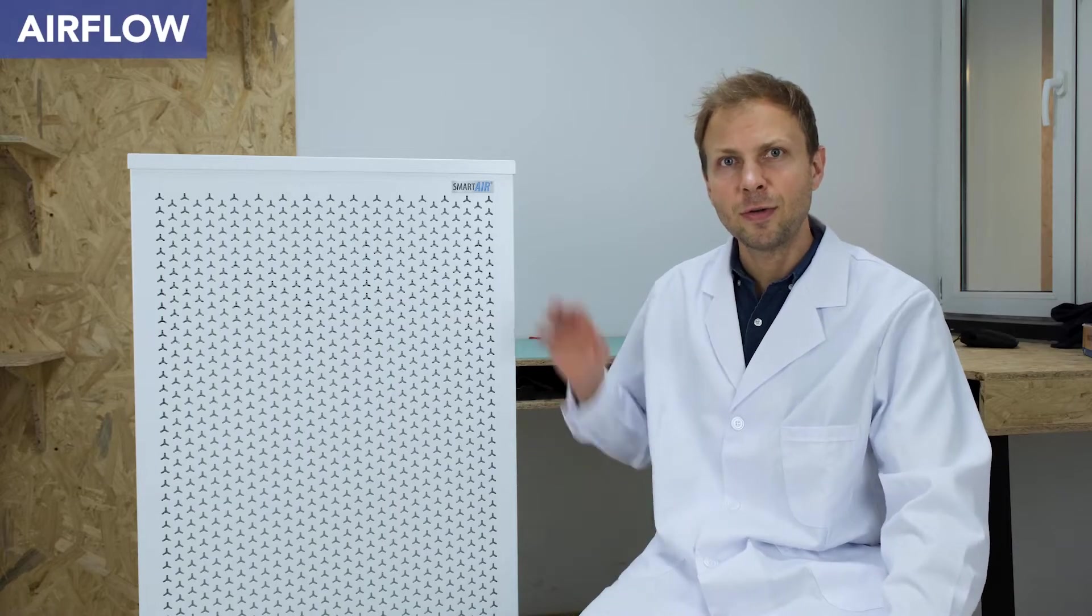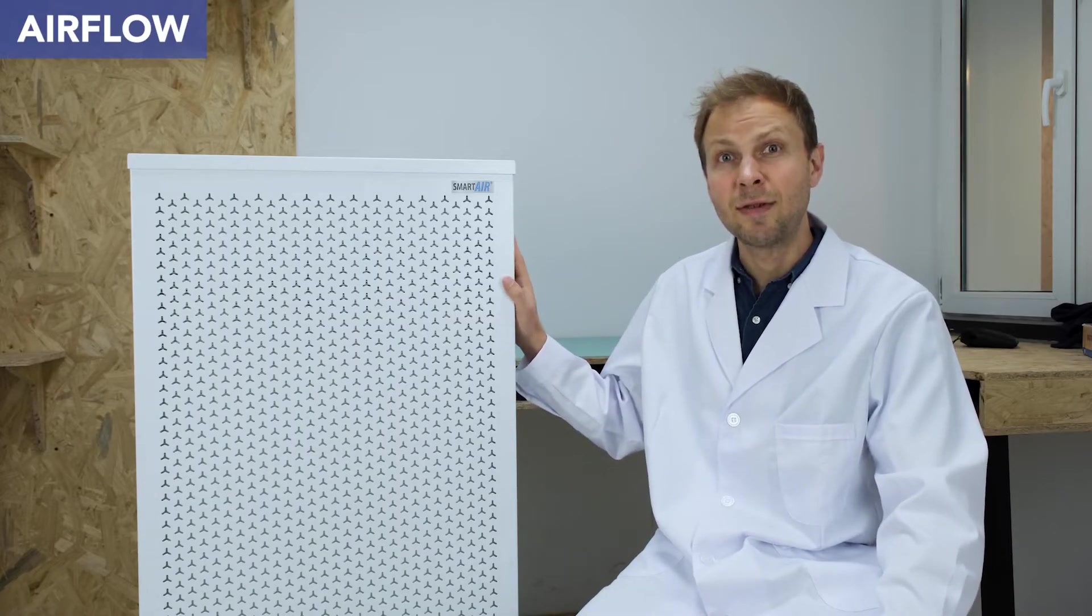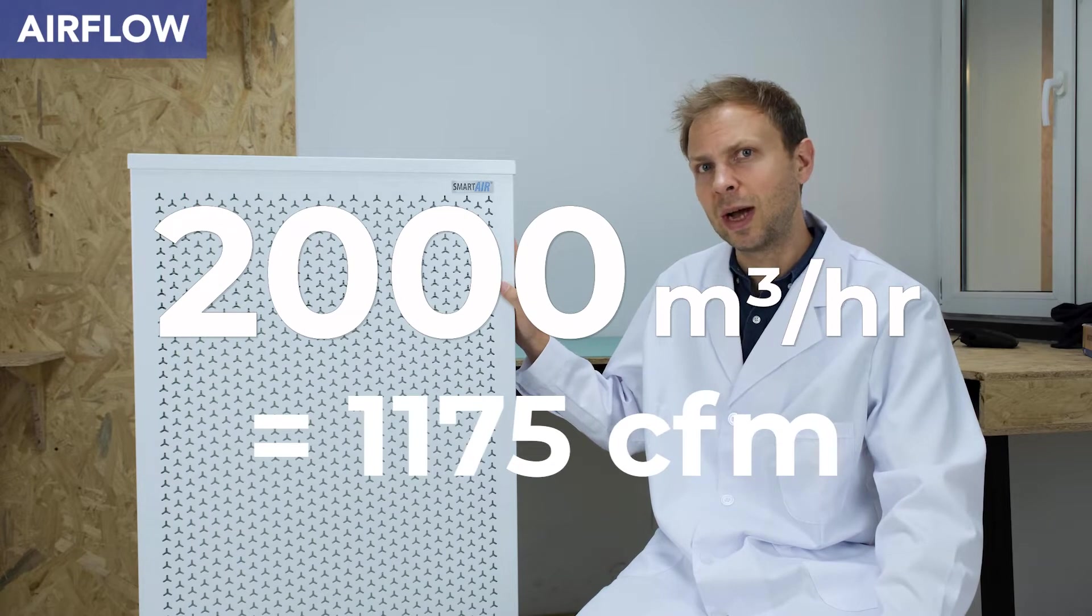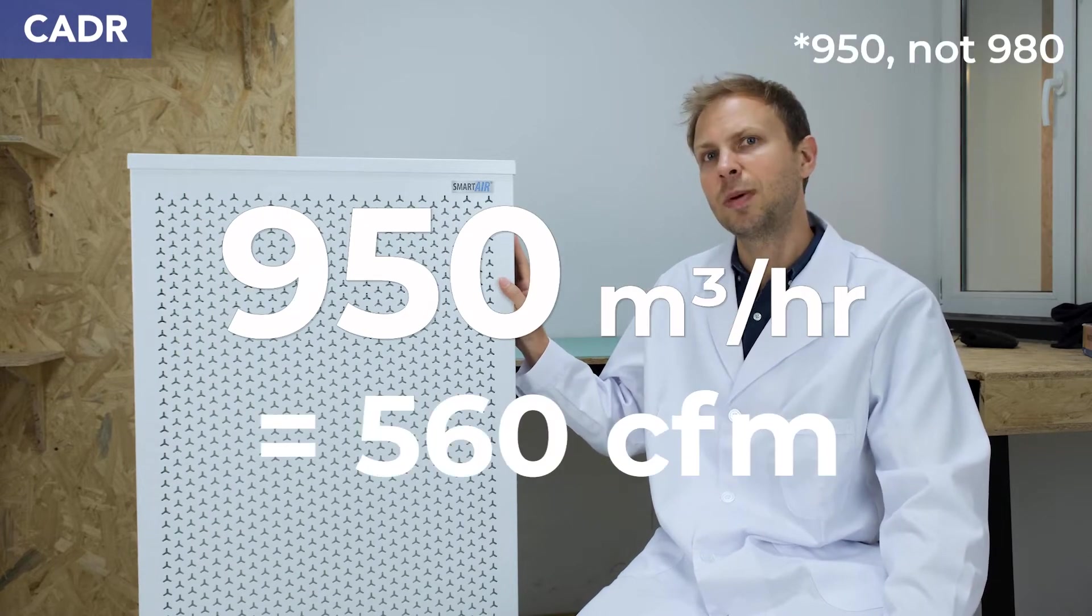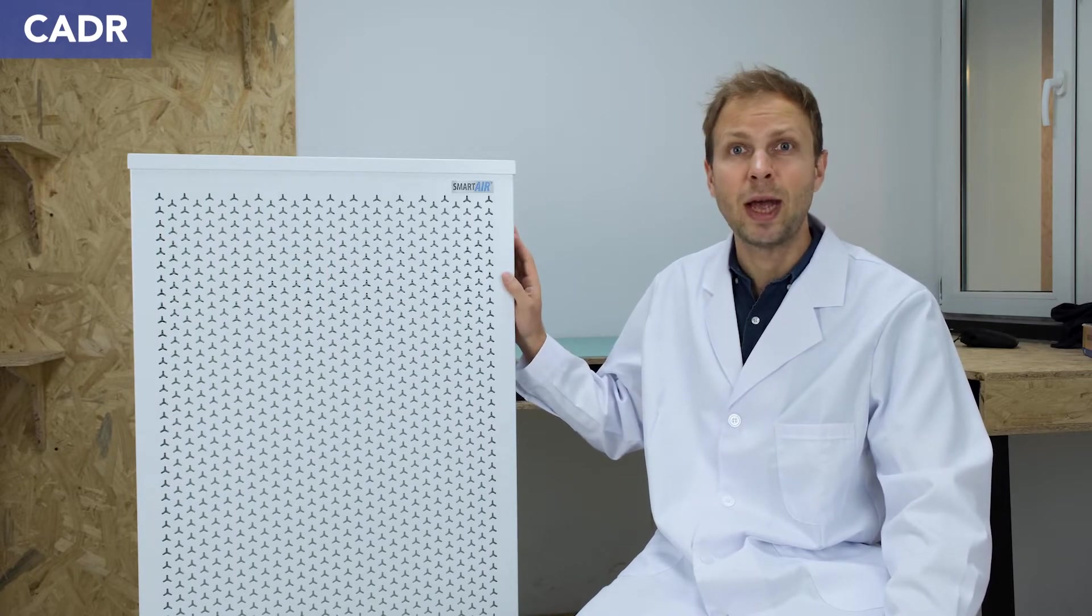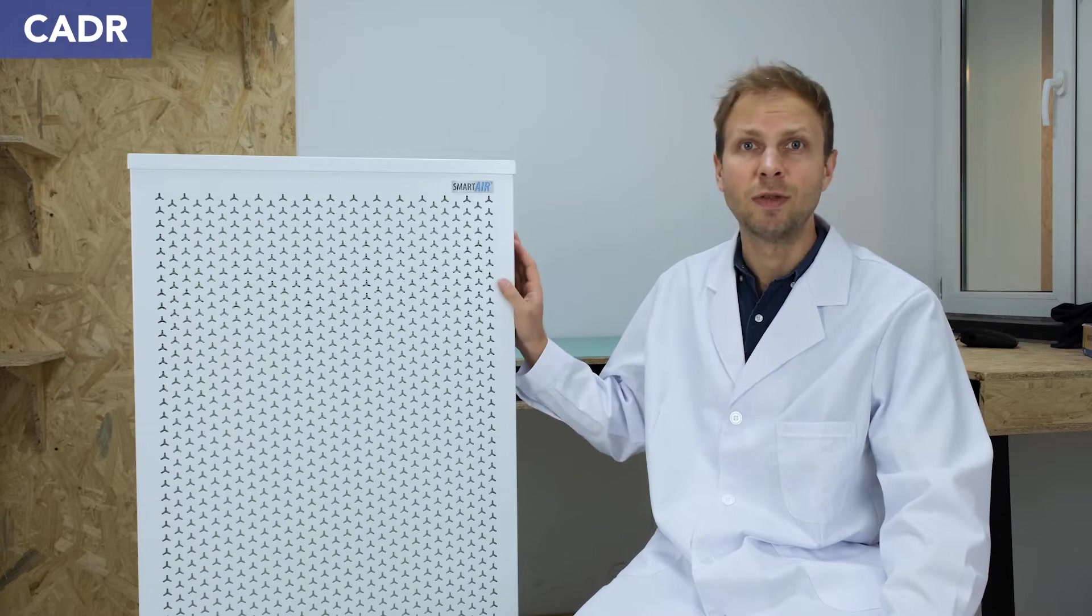First of all let's talk about airflow. The Blast Mark II has an airflow of 2,000 cubic meters per hour. It has a CADR of 980 cubic meters per hour so these numbers are really high and there's not much out there that compares with the Blast Mark II in terms of these specs.